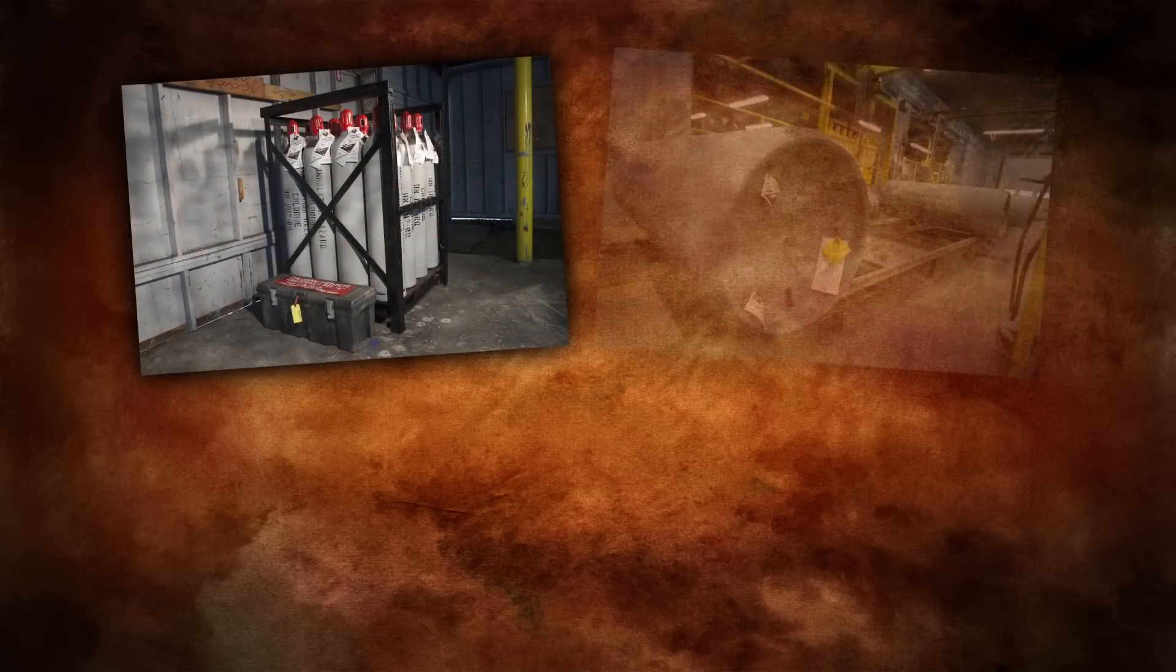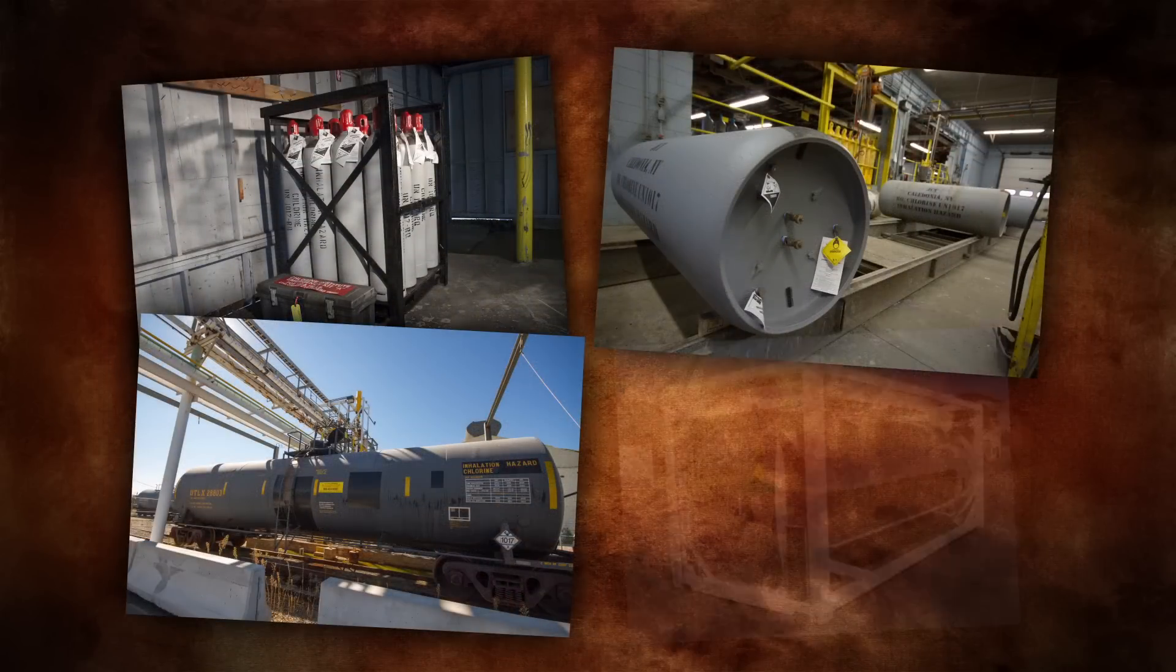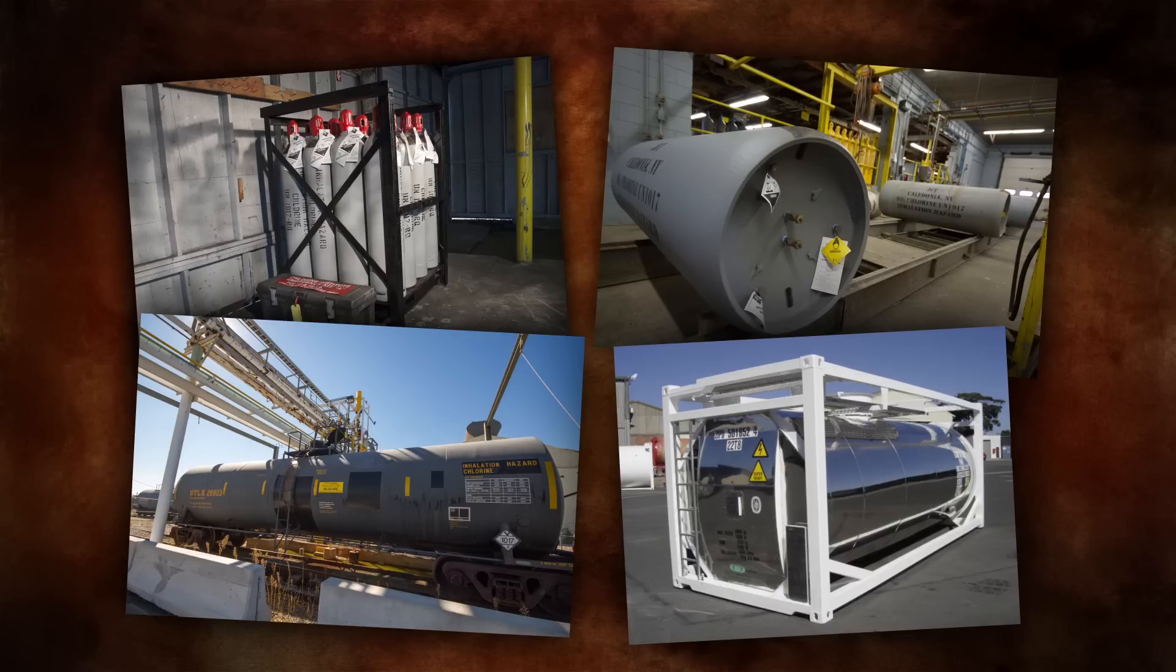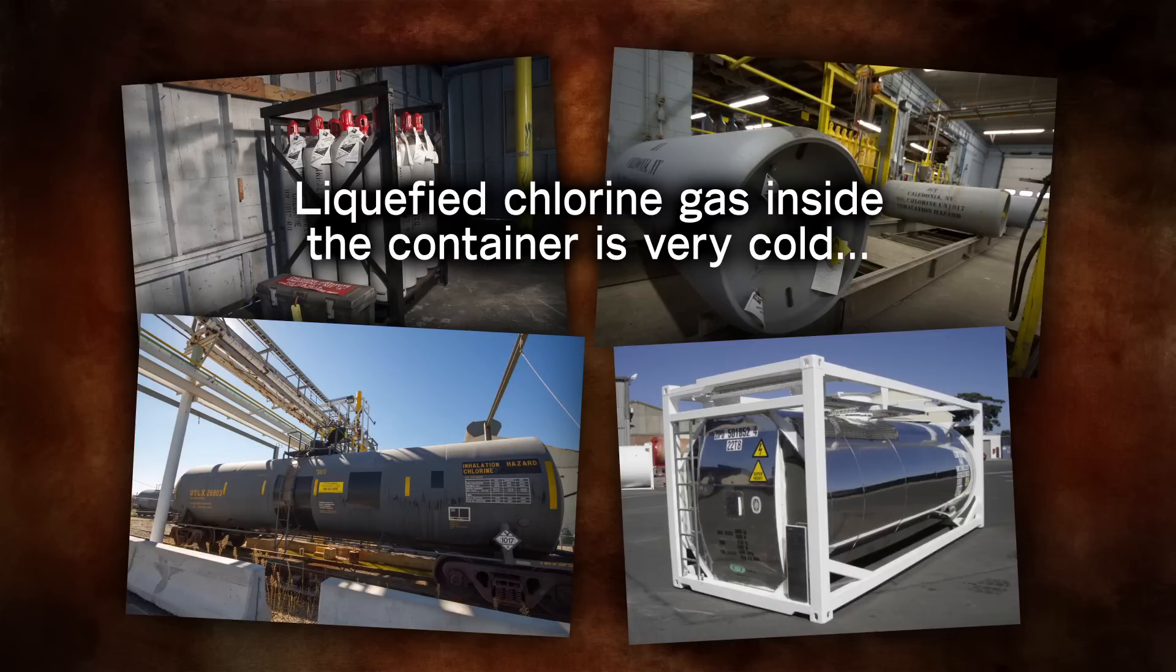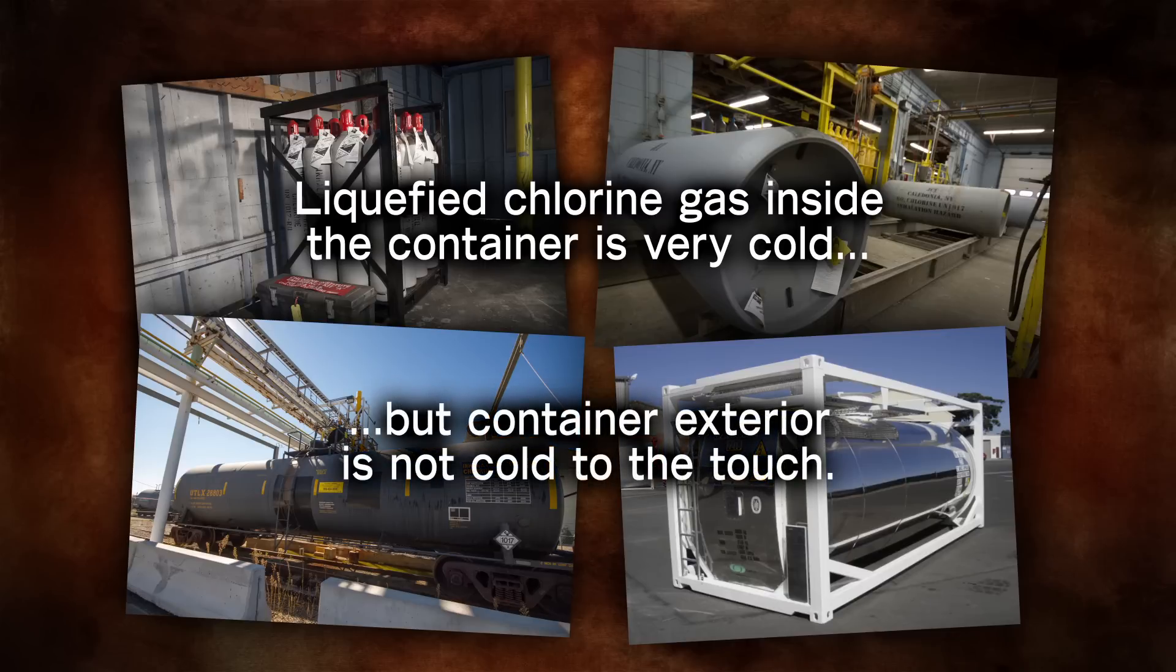The chlorine in a cylinder, ton container, tank car, or cargo tank is a liquefied gas under pressure. The temperature of that liquefied gas is cool, but not so cold that the exterior of the container would be cold to the touch.